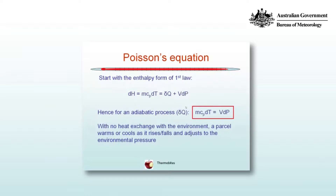For example, a parcel of air that ascends or rises in the atmosphere will encounter lower and lower environmental pressures and will itself expand until its pressure adjusts to the environmental pressure. As it does so, the temperature decreases. The parcel cools.